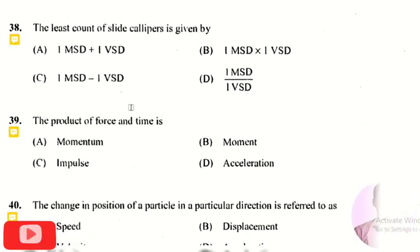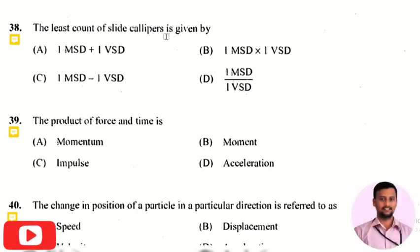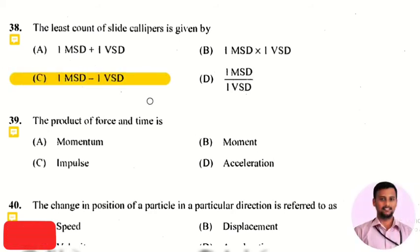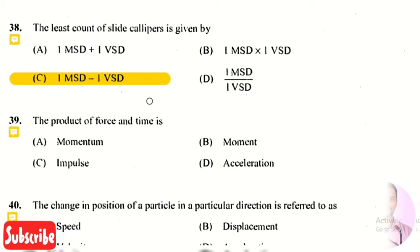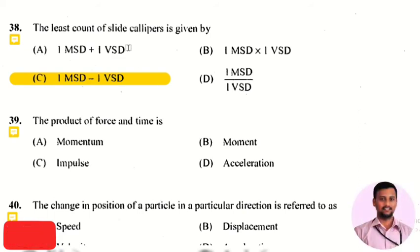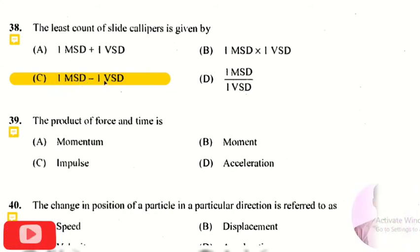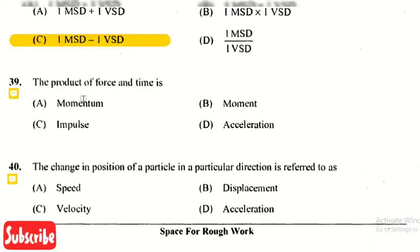The next question is: the least count of a slide caliper is given by — the right answer is option 3, that is main scale division minus vernier scale division. So the least count of a slide caliper is given by main scale division minus vernier scale division.